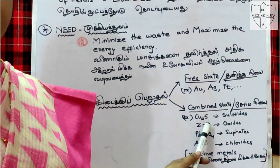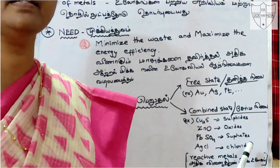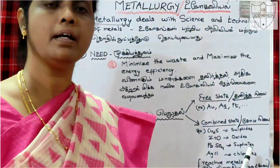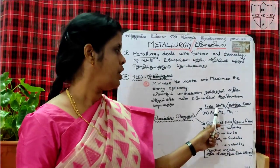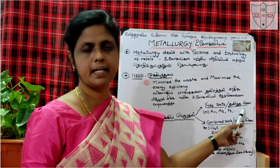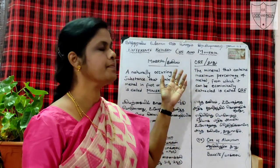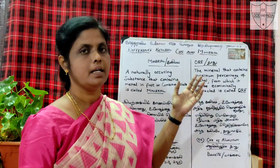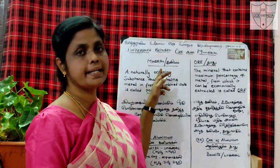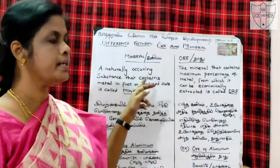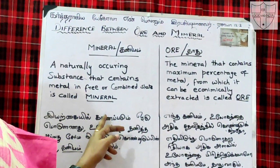Metals can exist with oxygen, also with sulphide, and also with chloride and silicon. These involve two metals and two elements, and they are created in a combined state. So in nature, metals can exist in a free state or a combined state. A naturally occurring substance that contains a metal in a free or combined state is called a mineral.